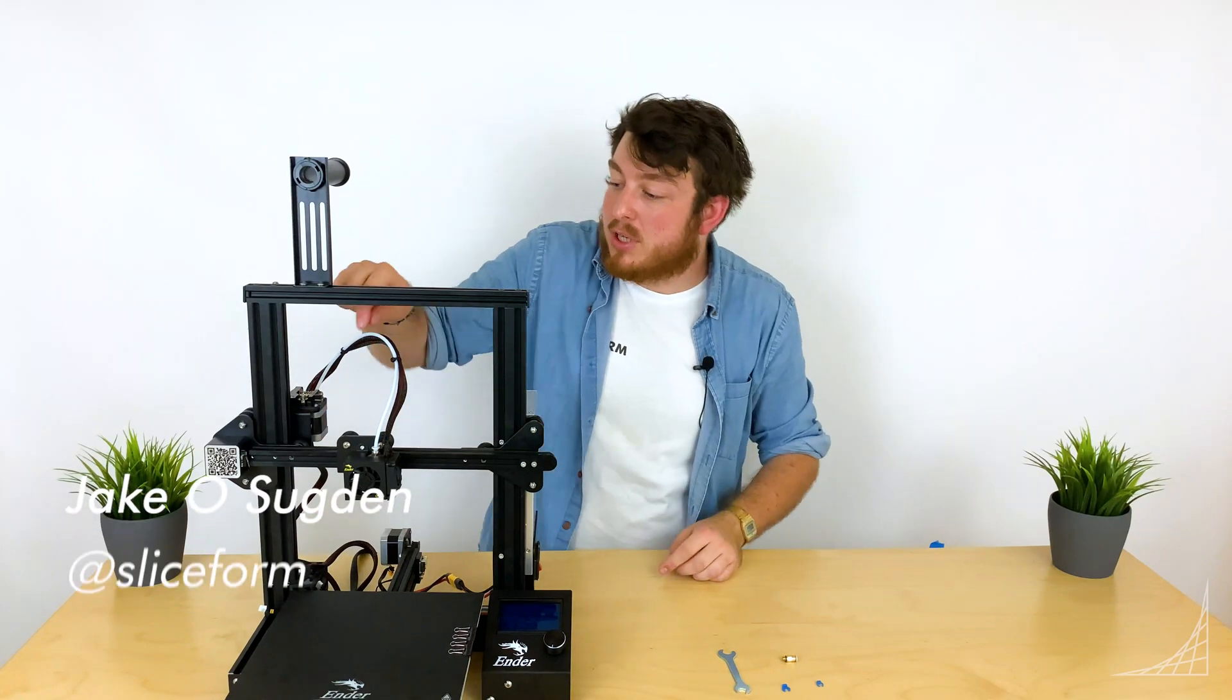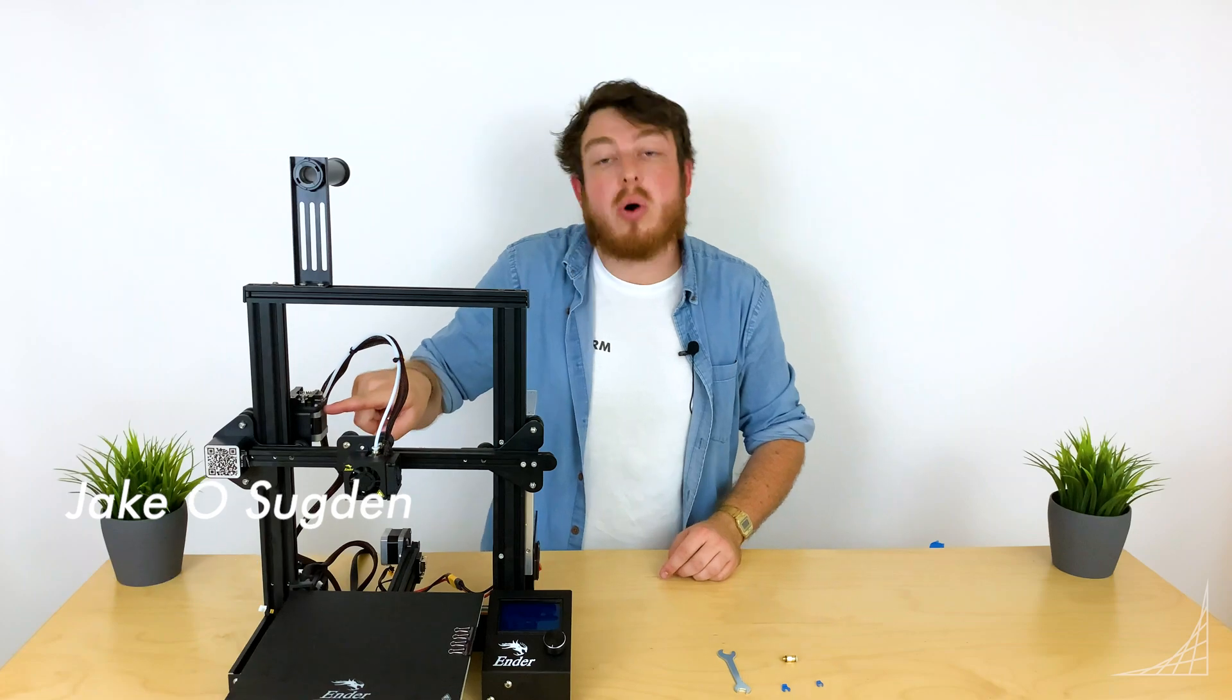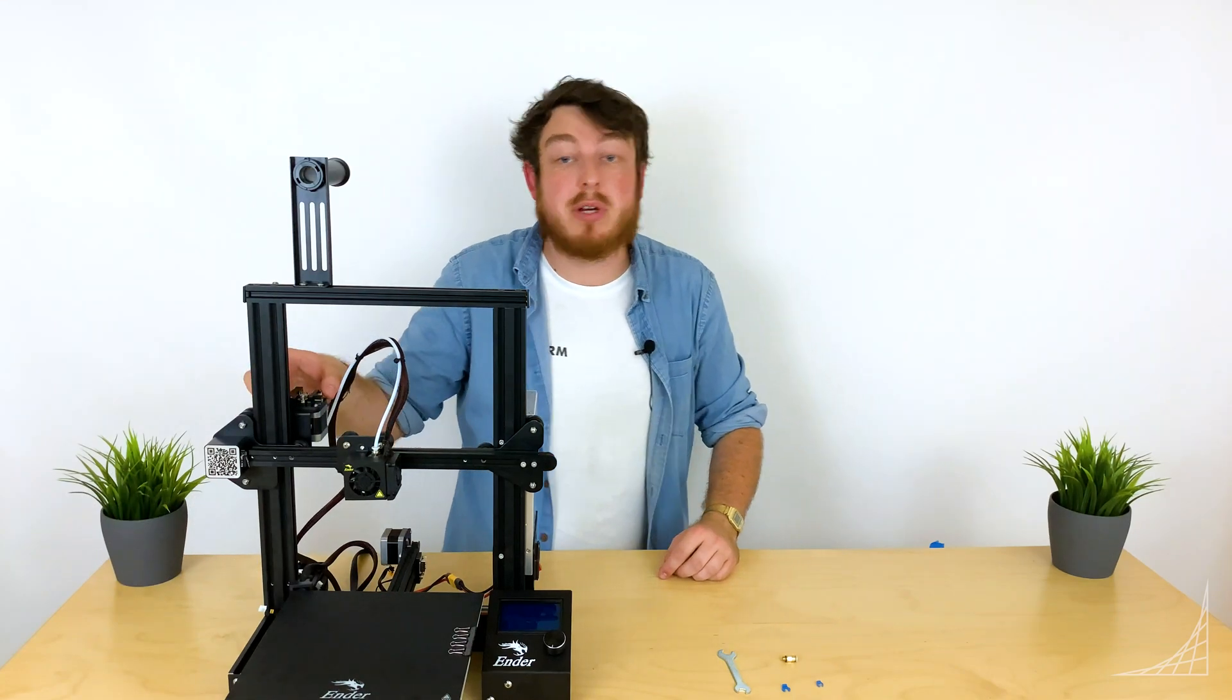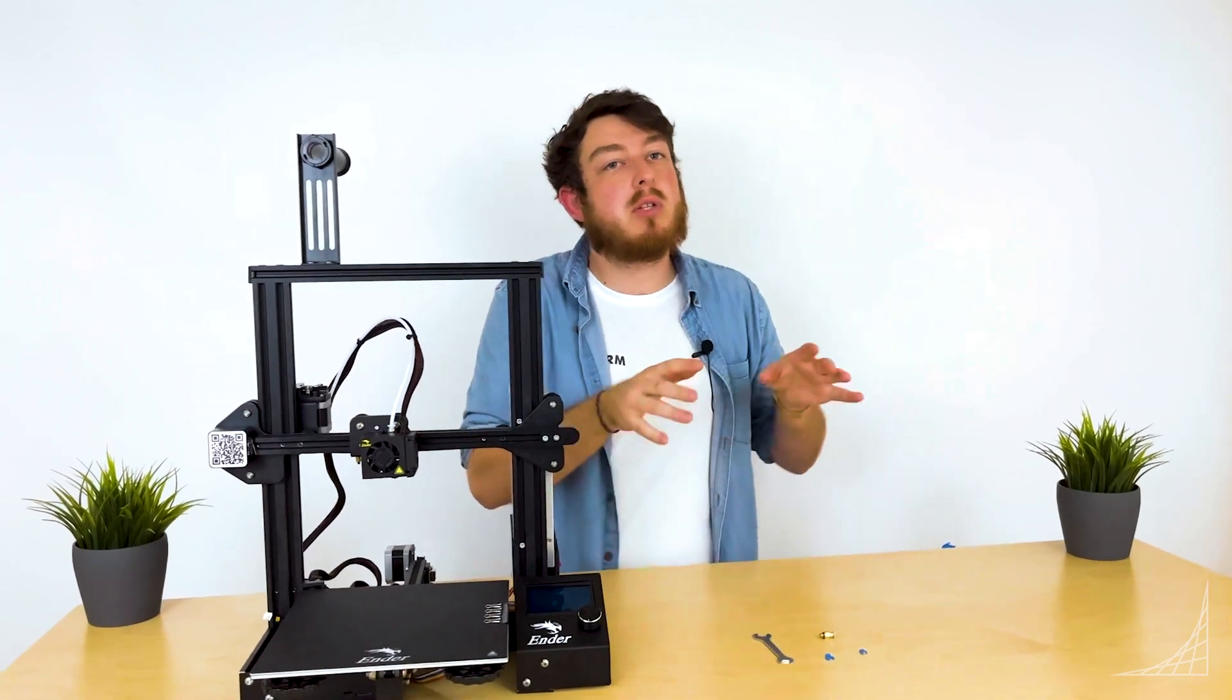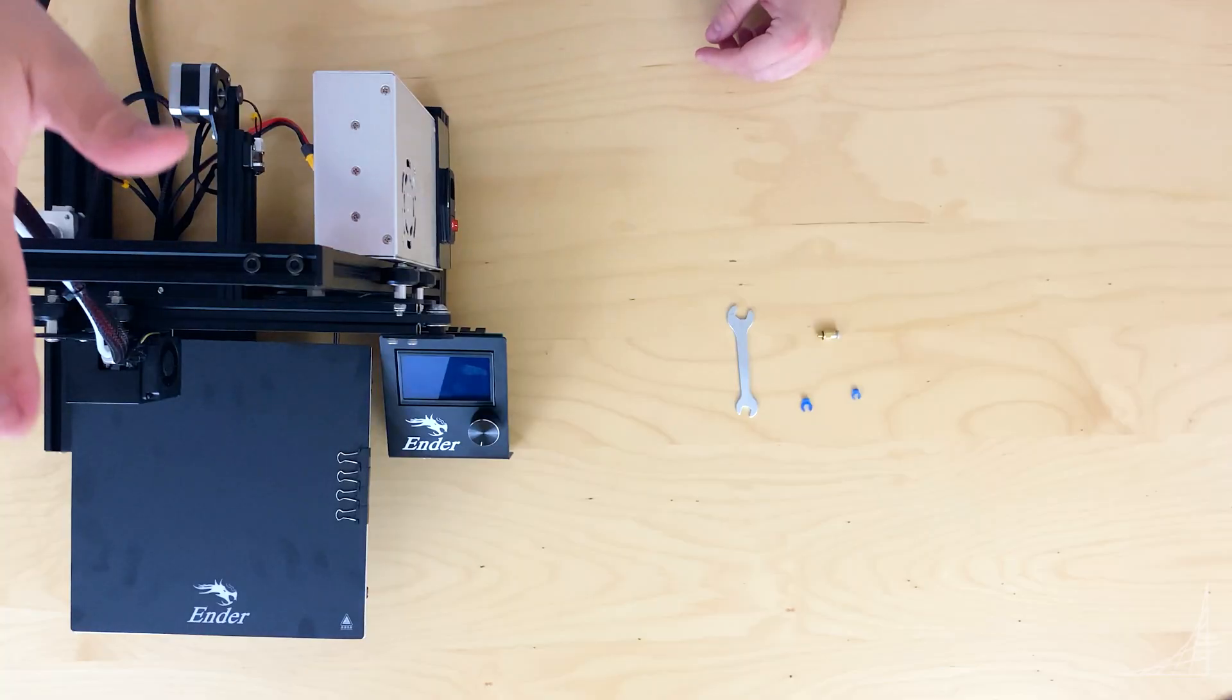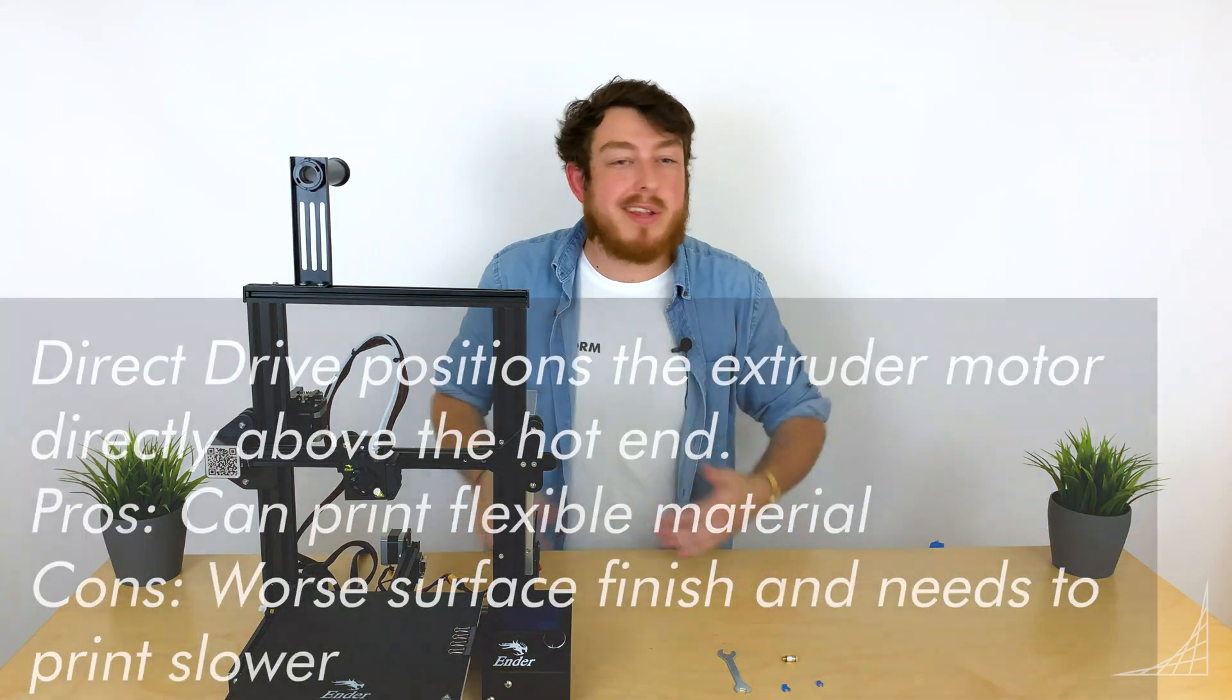For this next section we're going to be attaching our PTFE tube to the hot end and the cold end, also known as the extruder. When you're talking about 3D printers you can actually split them into two different groups: ones that use Bowden connectors and ones that have a direct drive. These are words you'll come across all the time, but we'll actually go over them in a little bit of depth here.